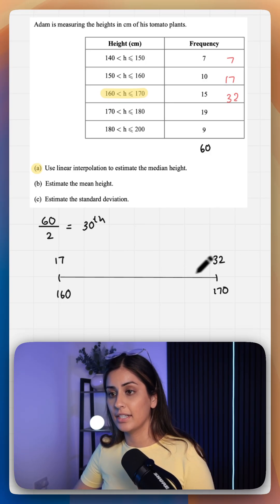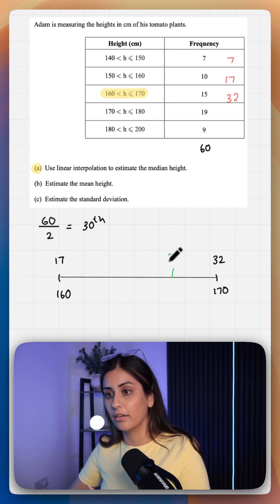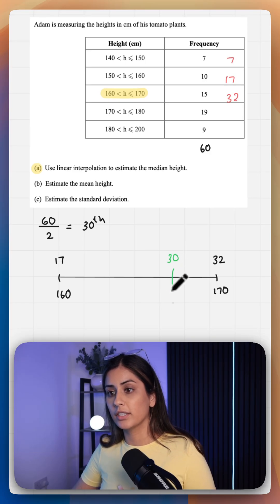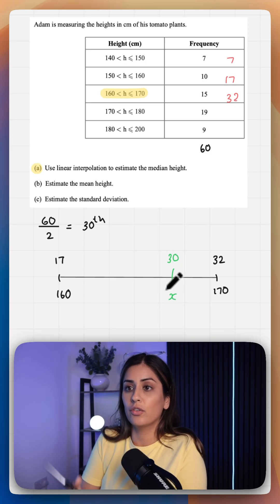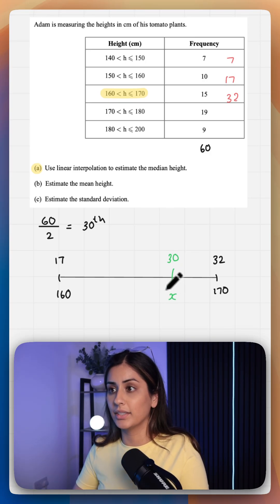Our median value is our 30th value. It's going to sit closer to 32, let's say it's somewhere around here. And what we are trying to find is this corresponding x value of where that sits in the range of 160 to 170.